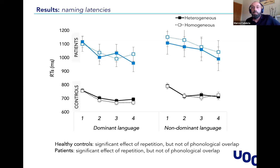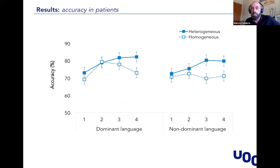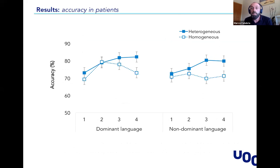When we moved to accuracy, we didn't find any effect for healthy individuals, but in patients we found that accuracy increased across trials for the heterogeneous condition when patients were asked to name phonologically related items. But this was not the case for the homogeneous condition — the accuracy of patients in that condition was lower than in the heterogeneous condition, meaning it was more difficult for them to retrieve words of pictures presented in that condition. So we found interference instead of facilitation as we expected.